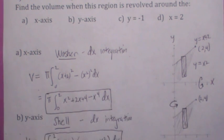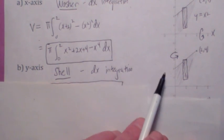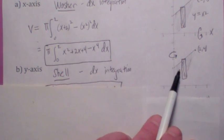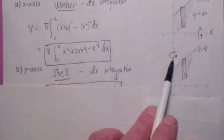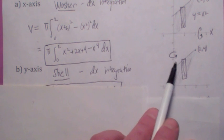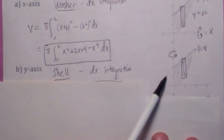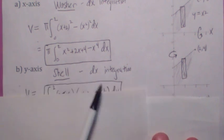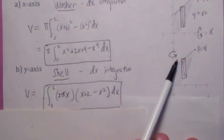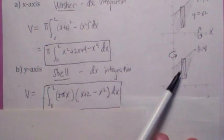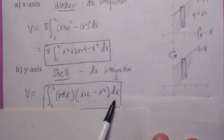When you revolve it around the y-axis, it would be better to use the shell method. Notice the rectangle looks the same, but when you revolve around the y-axis you're adding up concentric shells from 0 to 2. It's 2π times x — x is the distance to the axis of revolution — times the height of the rectangle, which is top minus bottom, dx.